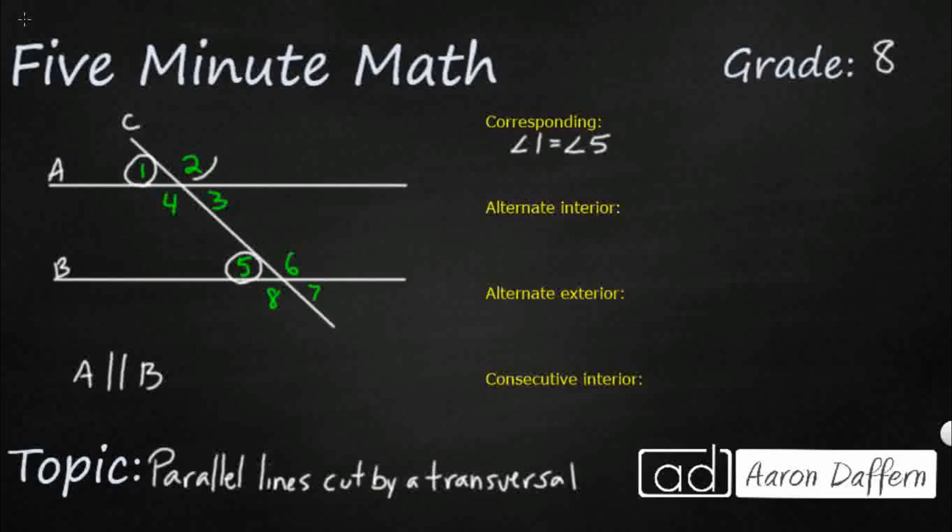We could also say the same thing for angle 2 and 6. Take a look at angle 2 and 6. They're both obtuse. So we can say angle 2 equals angle 6. We could also say the same for the bottom set.